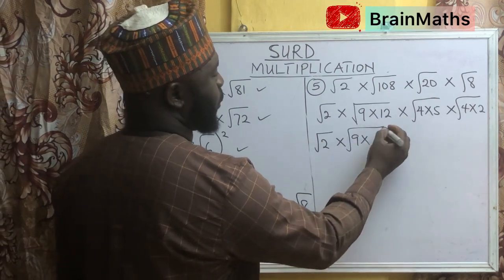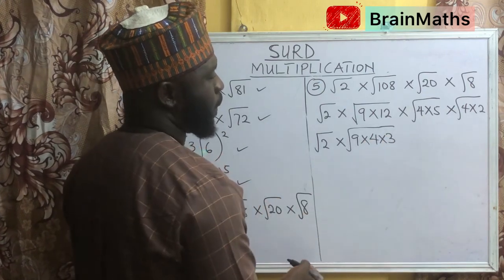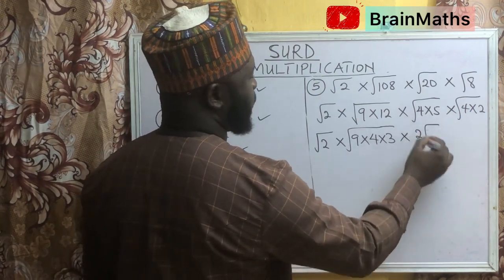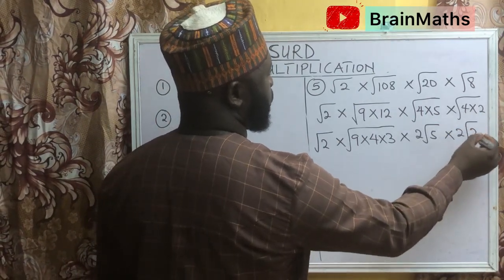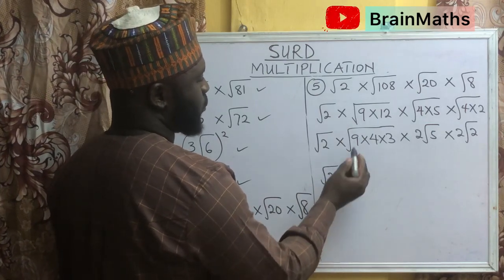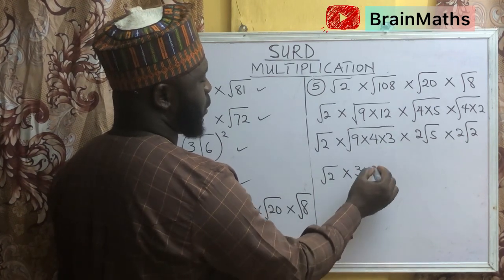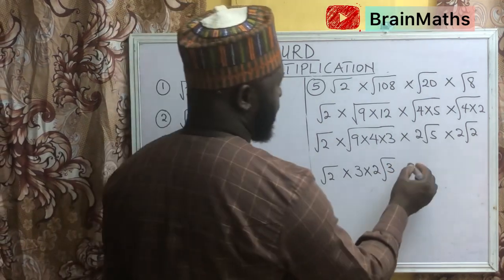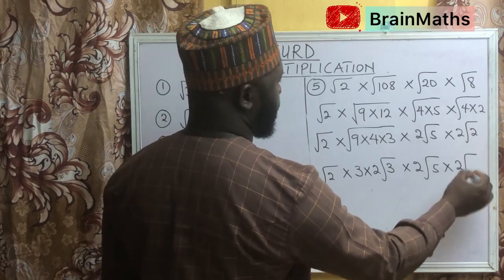Root 2 times root 9 times — this 12 can be further broken into 4 times 3. Root 2 times, the square root of 4 is 2 root 5 for this one. The square root of 4 is 2, leaving us with root 2. Then we have root 2 times square root of 9, which is 3, times square root of 4, which is 2 root 3, times 2 root 5, times 2 root 2.